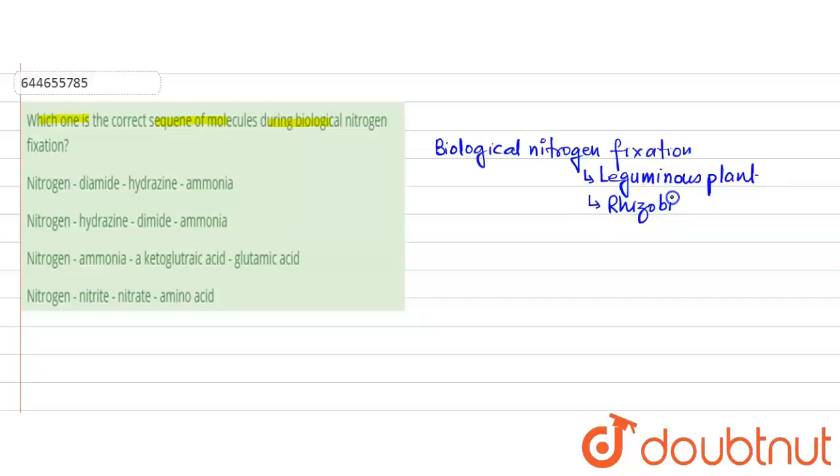So what happens first? The nitrogen, in presence of nitrogenase enzyme, undergoes reduction and a compound called diamide is formed with molecular formula N2H2.